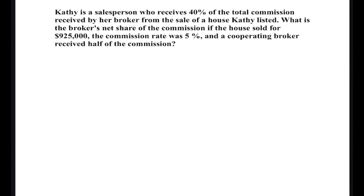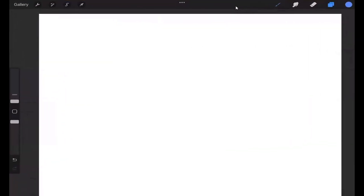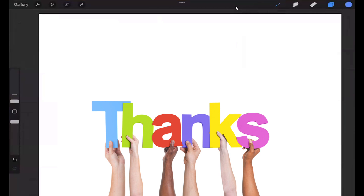Problem 2: Kathy is a salesperson who receives 40% of the total commission received by her broker from the sale of a house she listed. What is the broker's net share of the commission if the house sold for $925,000, the commission rate was 5%, and a cooperating broker received half the commission? It's a lot, but this is an excellent question — because you could be Kathy.